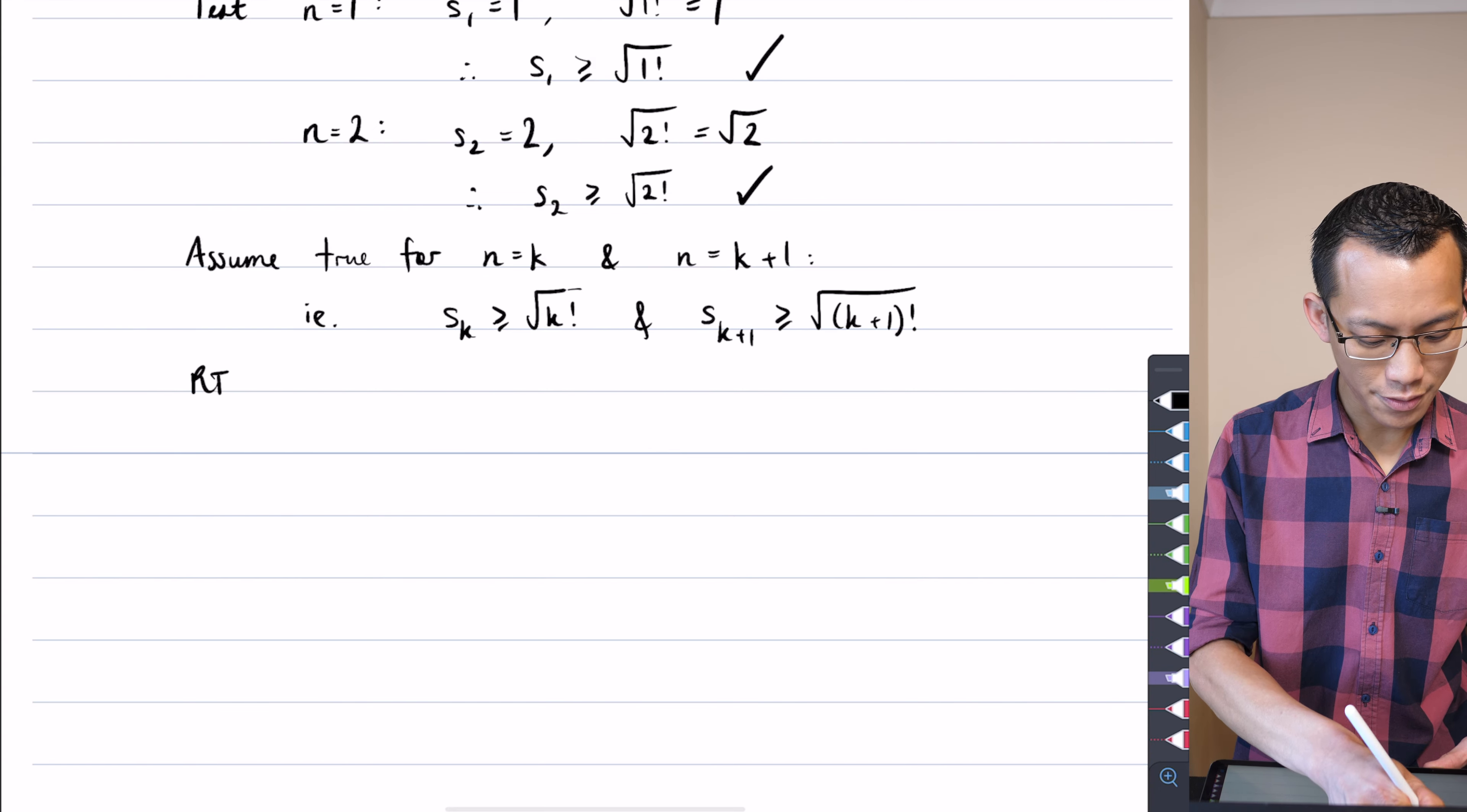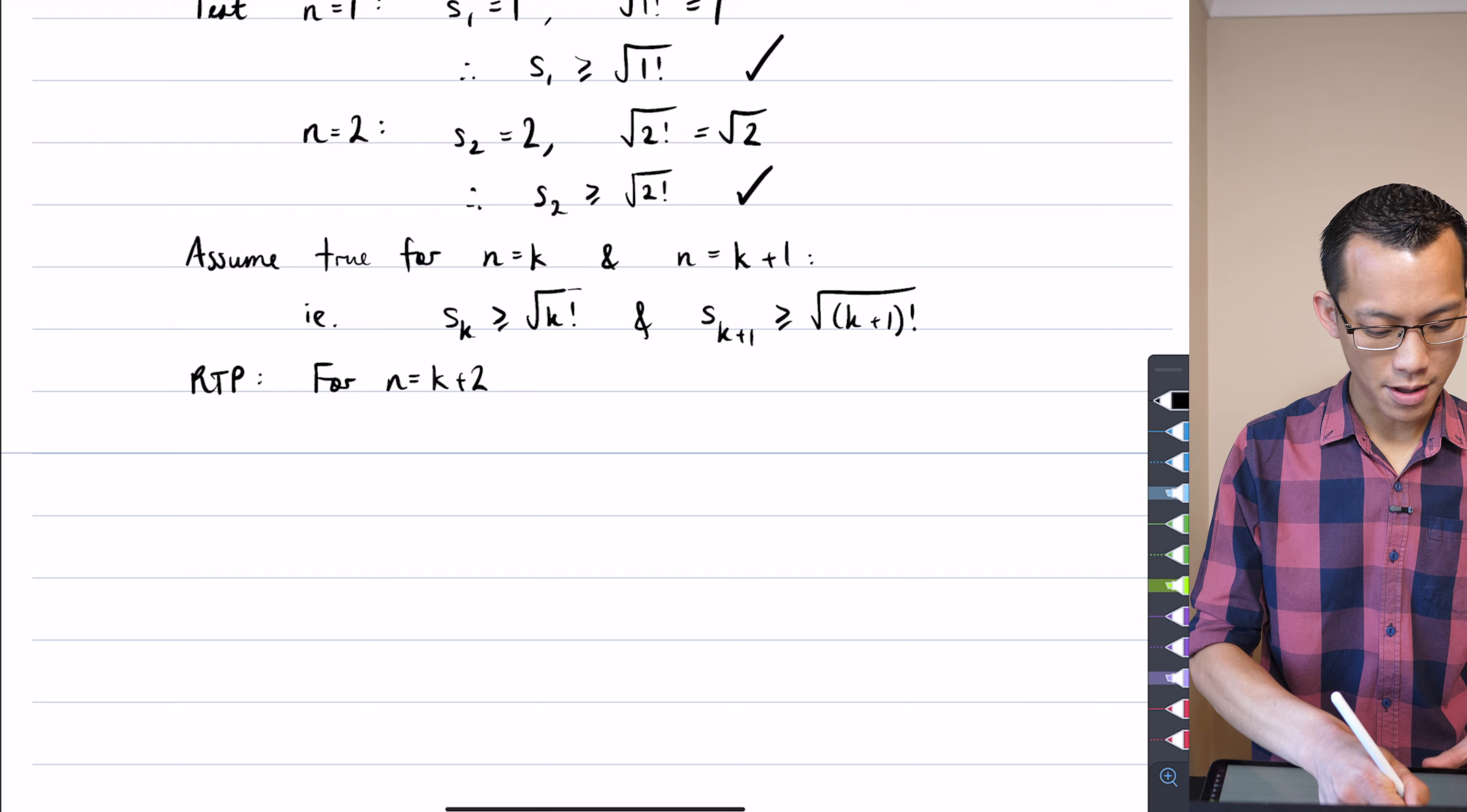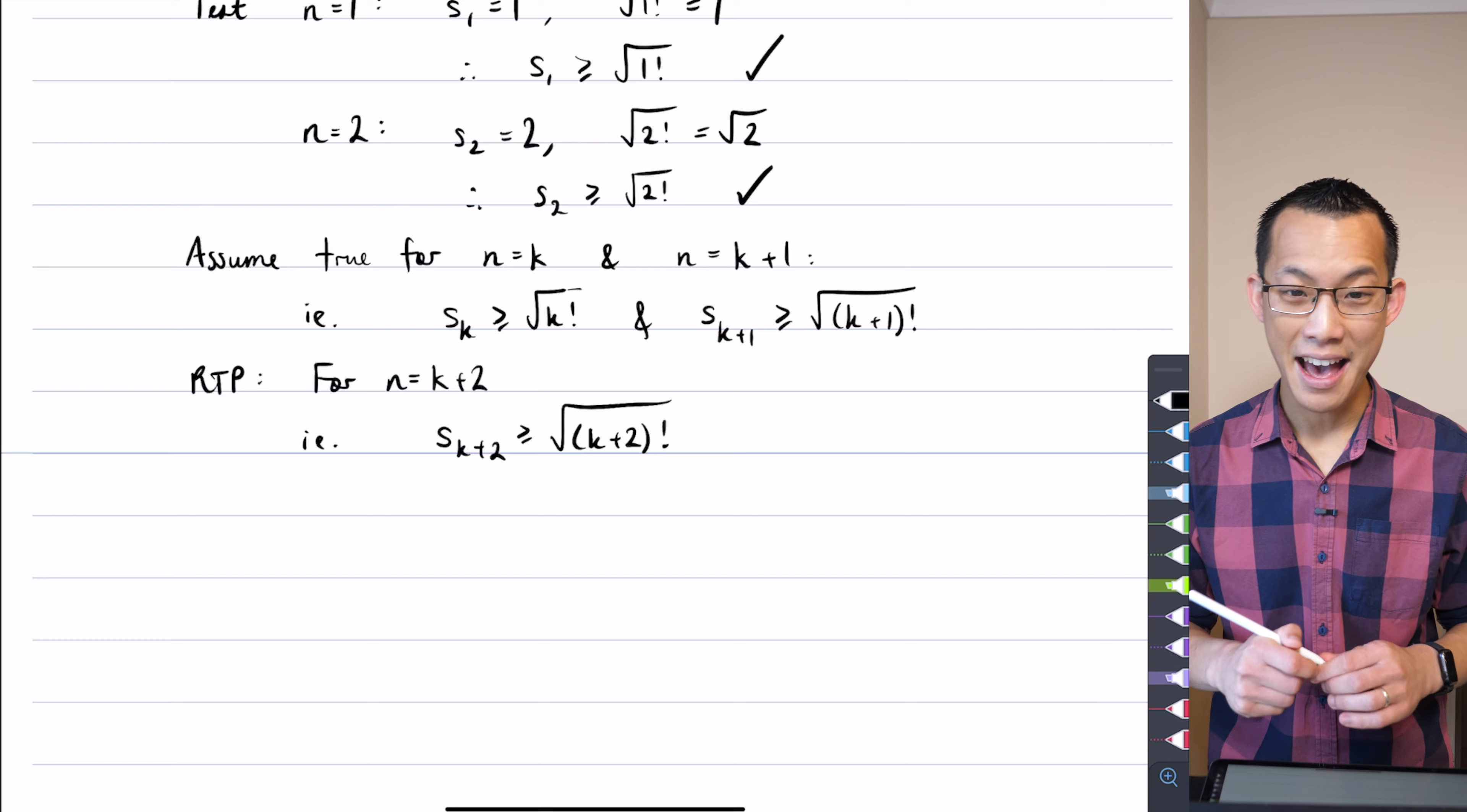Now what I'm required to prove is that for n equals k plus 2, which is the next step, I have to say that s of k plus 2 is going to be greater than or equal to k plus 2 factorial. How do I do it?